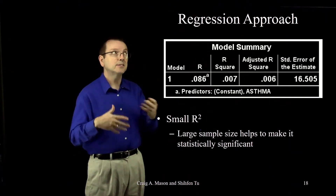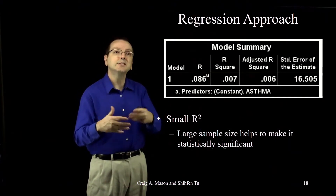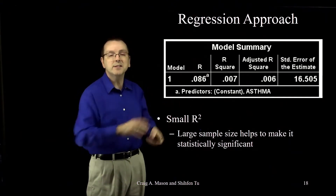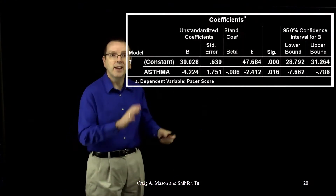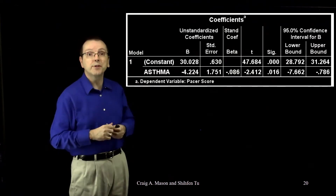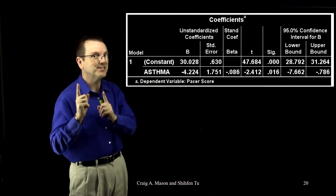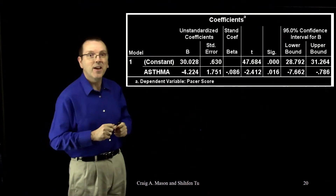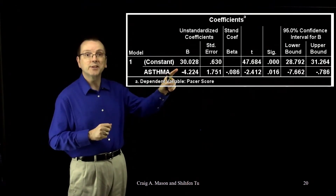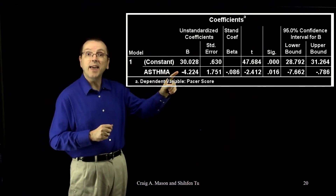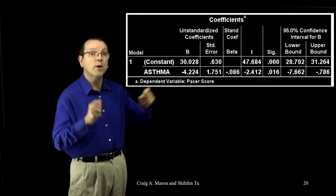The effect is not a lot, but it was statistically significant, as we just saw in the ANOVA table. That large sample size gives us the additional power to detect a difference even if it's a little small. Now finally, let's look at the coefficient table — this is where it really starts to get interesting. Our intercept is 30.028 and the asthma effect is negative 4.224.